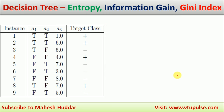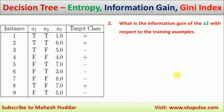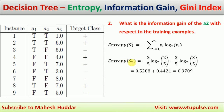Similarly, we will try to find the information gain of A2. Again, we need to find the entropy of possible values of A2. There are two possible values: true and false. For the entropy of true examples, there are 5 true examples. Out of that, 2 are positive and 3 are negative examples. So the entropy is minus 2/5 log(2/5) base 2 minus 3/5 log(3/5) base 2. If you solve it, you will get the entropy as 0.9709.